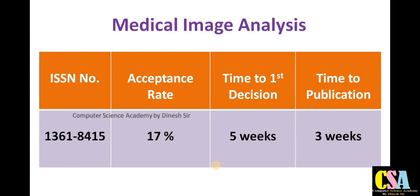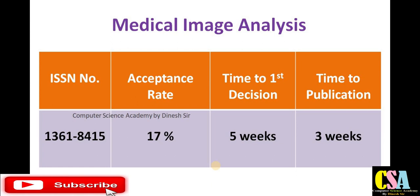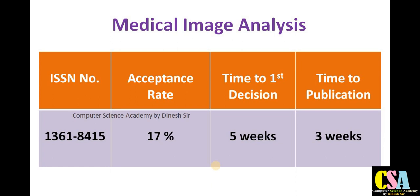The next category is Medical Image Analysis. Researchers from pharmacology, medical fields, computer science, IT, and electrical electronics can publish here because medical image analysis involves many fields. Explore this journal and find out the aim and scope. This is also a fast publication journal — your research paper will get published within eight weeks. First decision comes within five weeks and time to publication is three weeks, so within about two months. The acceptance rate is 17 percent.